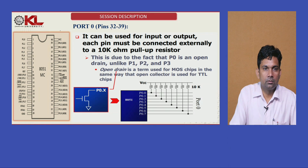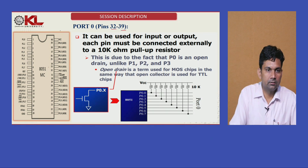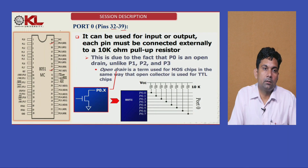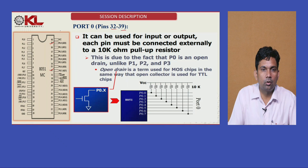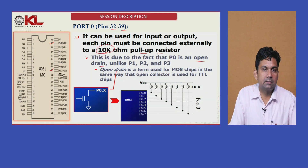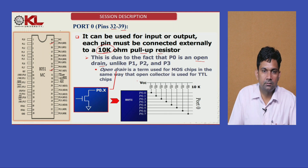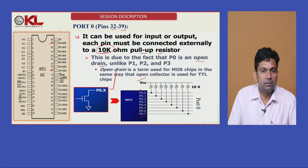Starting from Port 0 — pins 32 to 39. As mentioned earlier, we cannot use Port 0 directly as an input or output. We must connect a pull-up resistor circuit because Port 0 is an open drain. We need to connect a 10k resistor to each pin to work as input. This is the circuit we must connect to Port 0 for it to work as an input or output port.